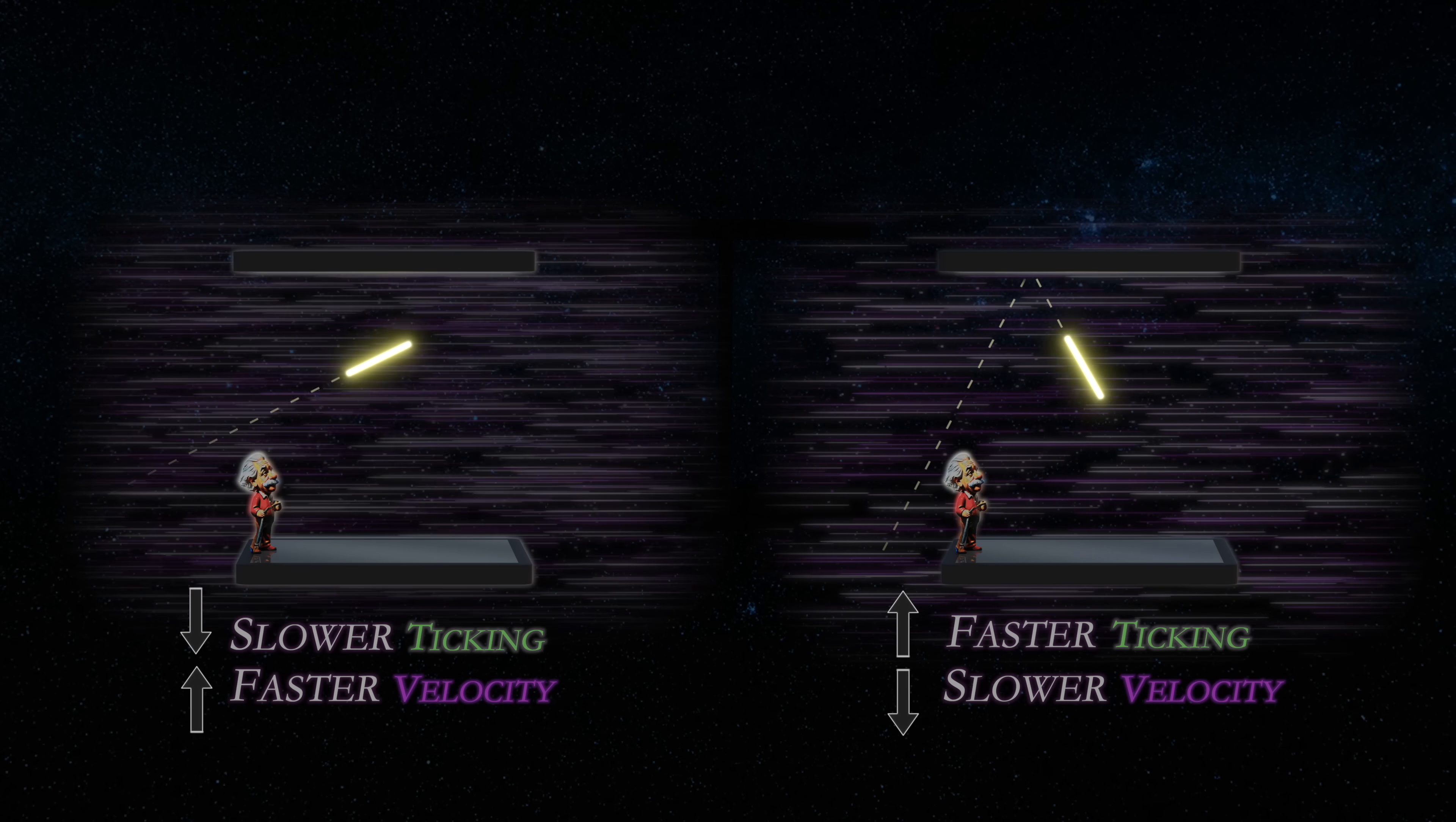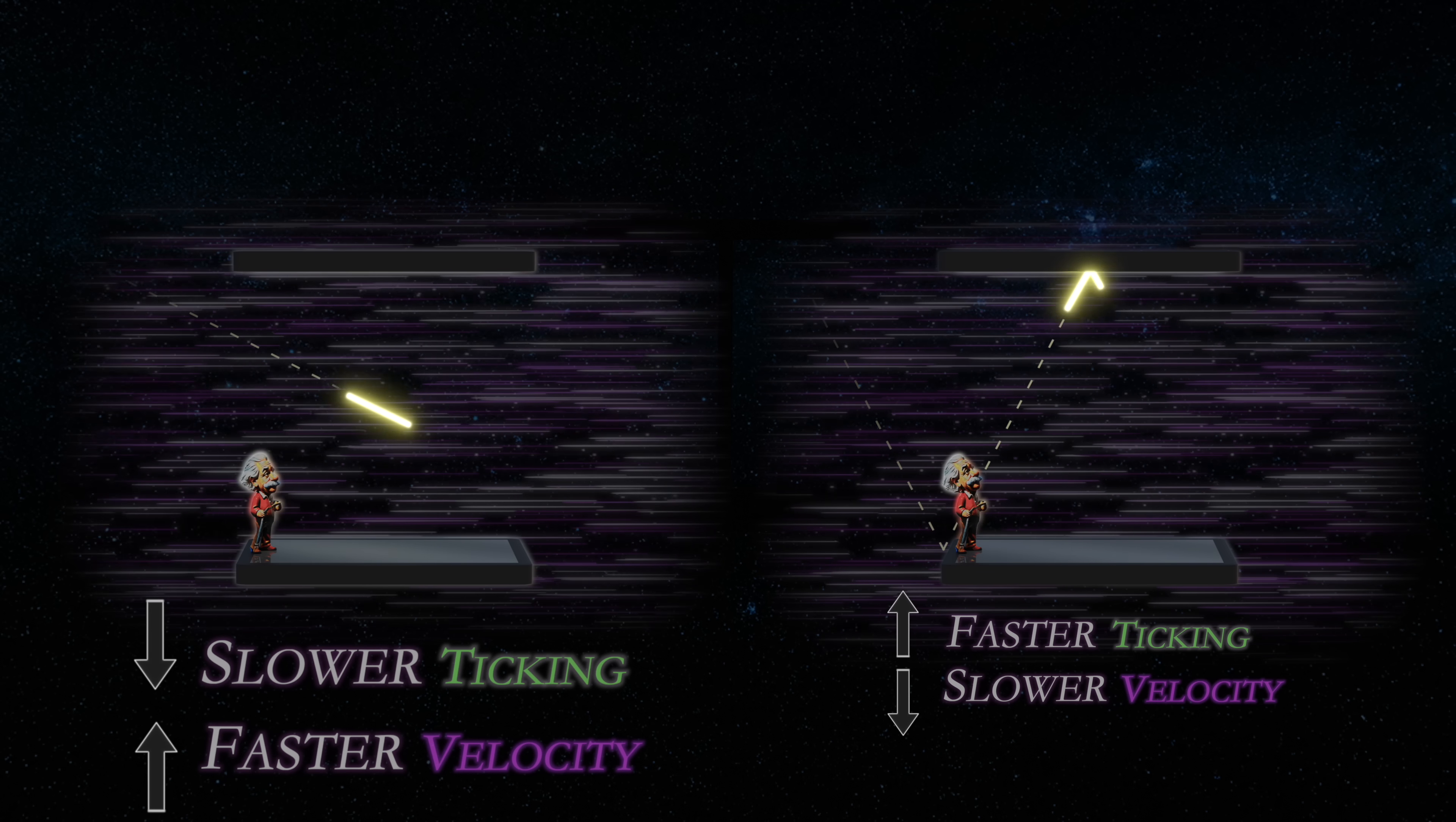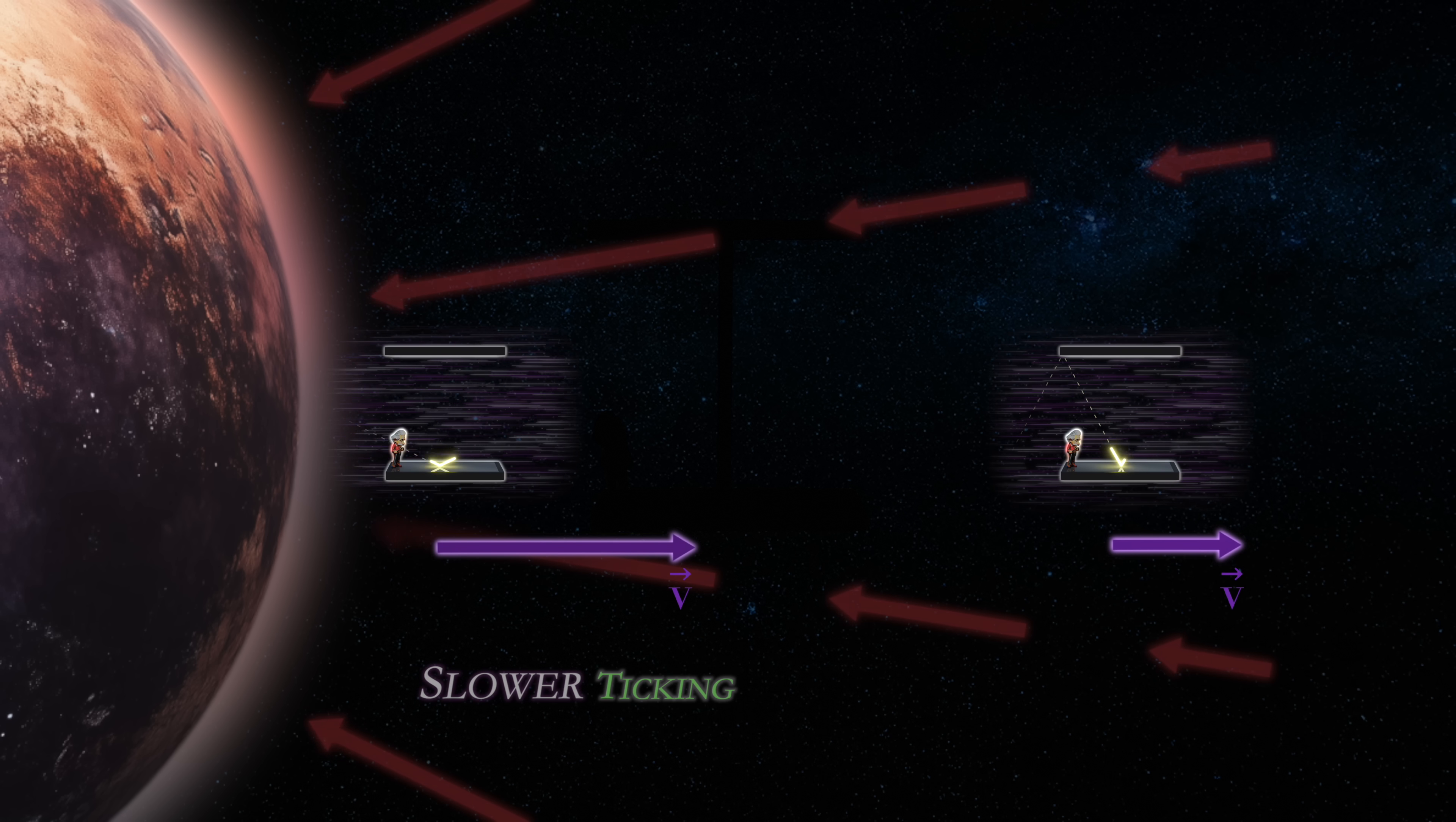But not some abstract, coordinative space. Rather, the physical space through which light and other causal information propagates as a wave. For, this is precisely what the equivalence of relativistic and gravitational time dilation implies. Clocks tick more slowly when moving faster with respect to such space. Hence, clocks which are ticking more slowly lower down in a gravitational field must be moving faster through this space than those higher up.